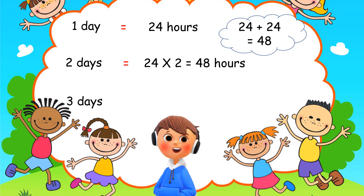Now have a go at this: how many hours are we going to have in three days? Pause the video and have a go. Welcome back! Did you say 24 multiplied by 3? If you did, well done — that gives us 72 hours. Always remember that one day equals 24 hours, and to convert from days to hours you multiply by 24.